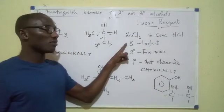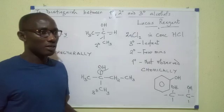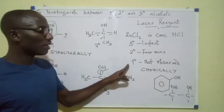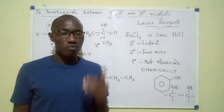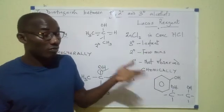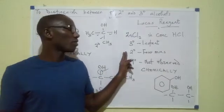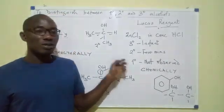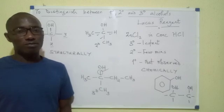With Lucas reagent, the alcohol classes behave differently. Tertiary alcohols give instant cloudiness — the whole mixture turns cloudy immediately. Secondary alcohols also give cloudiness, but it takes a few minutes. Primary alcohols show no cloudiness at all. To summarize: instant cloudiness means tertiary, cloudiness after a few minutes means secondary, and no cloudiness means primary.